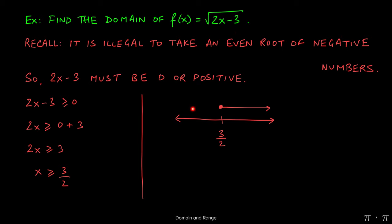Now let's say we pick a number to the left here, say 0. 2 times 0 would be 0. 0 minus 3 would be a negative 3. I cannot find the square root of a negative number. So that's why I put a cross over that region.